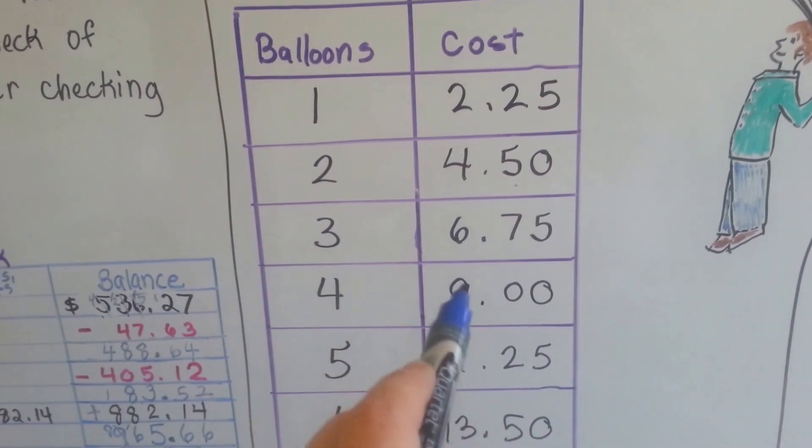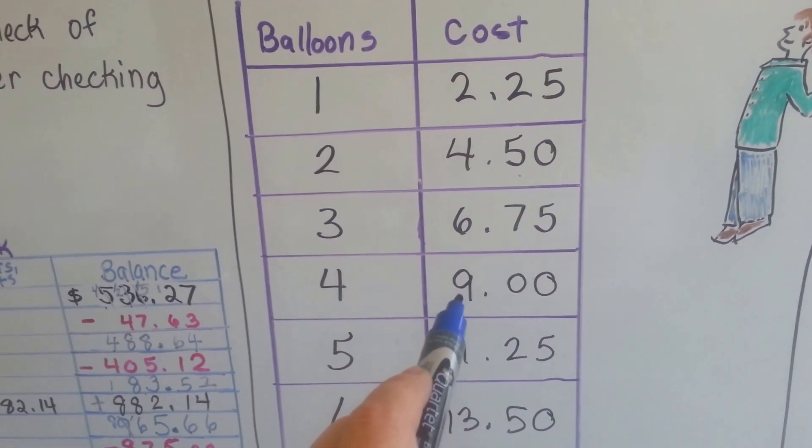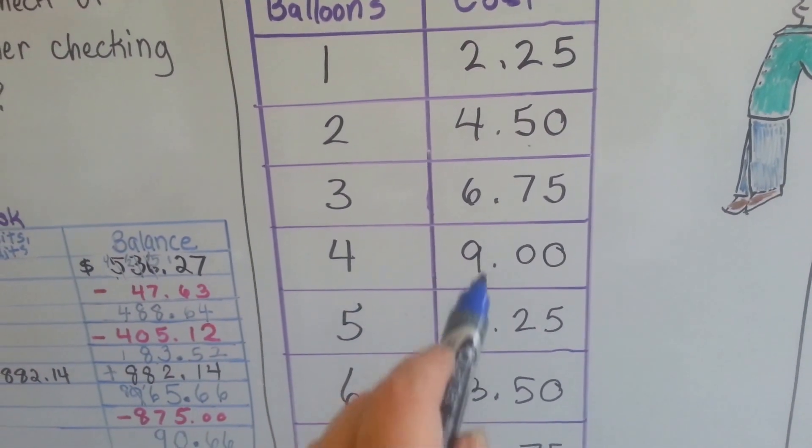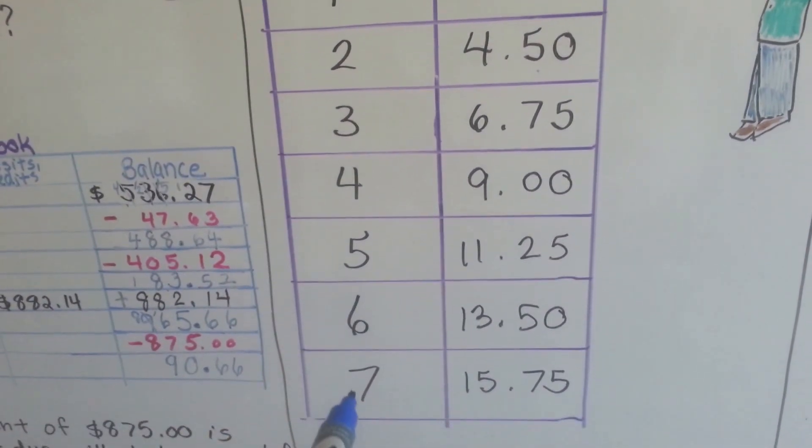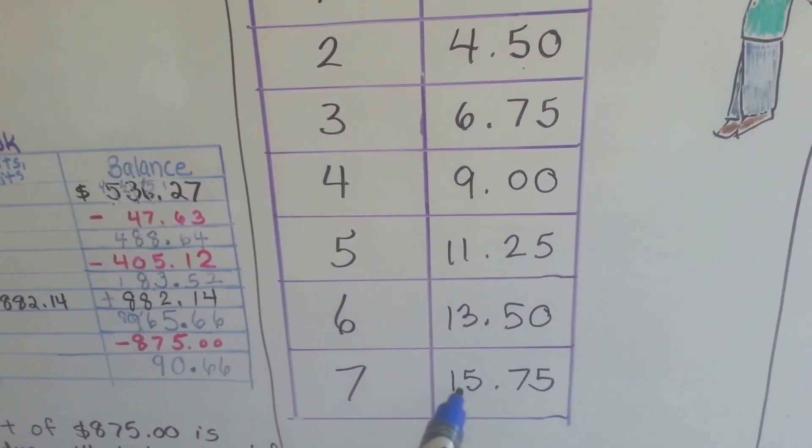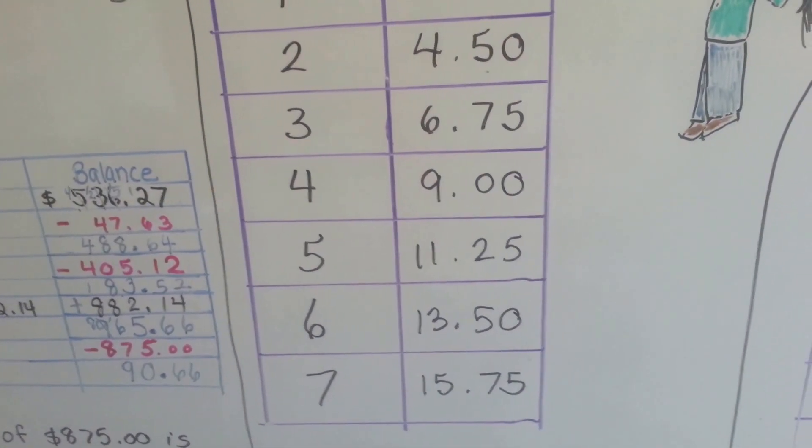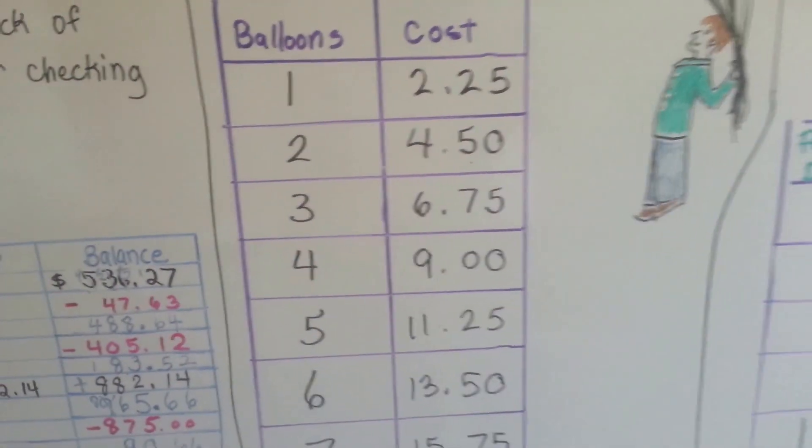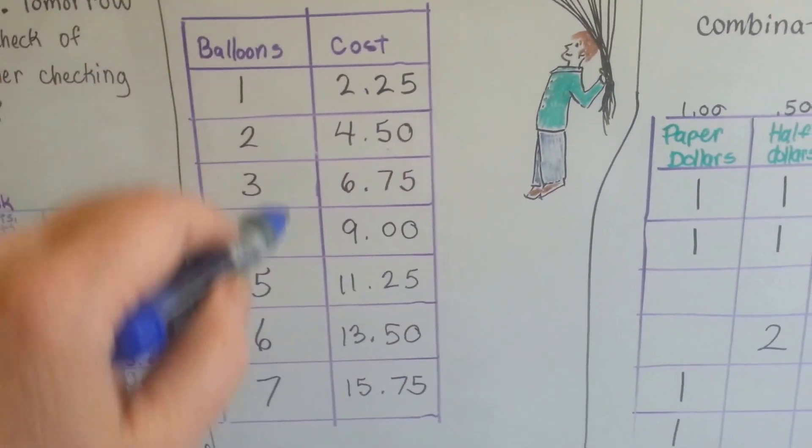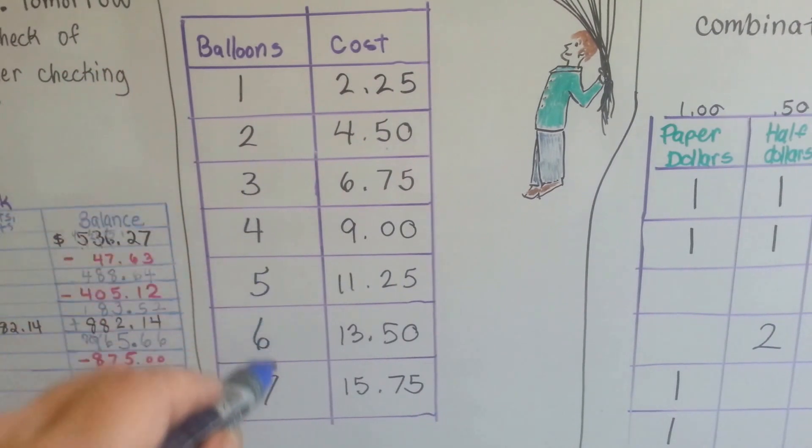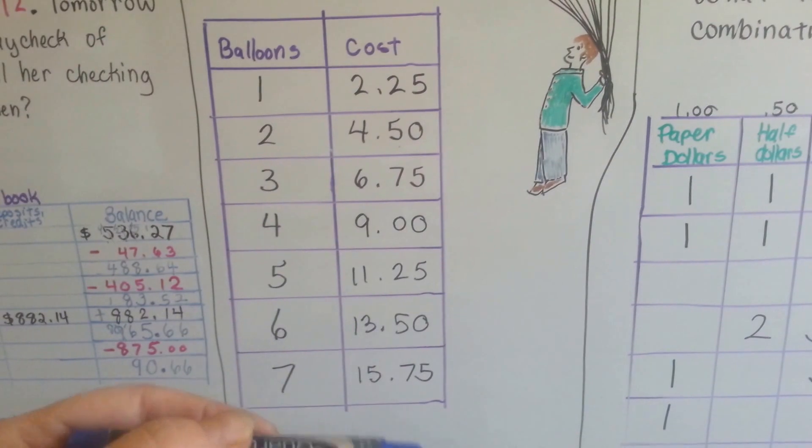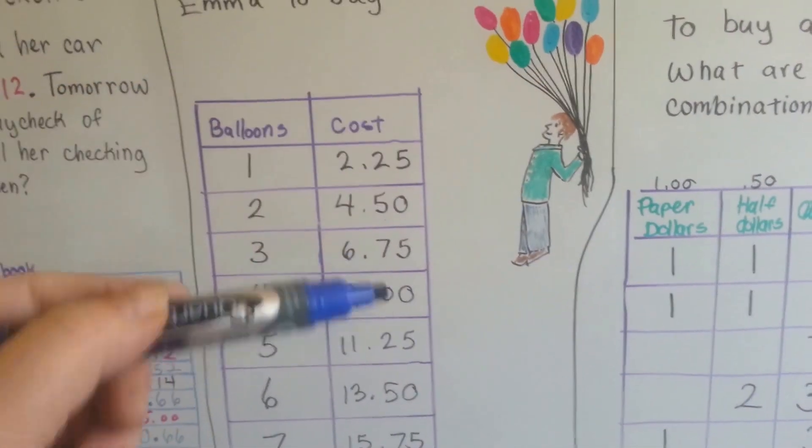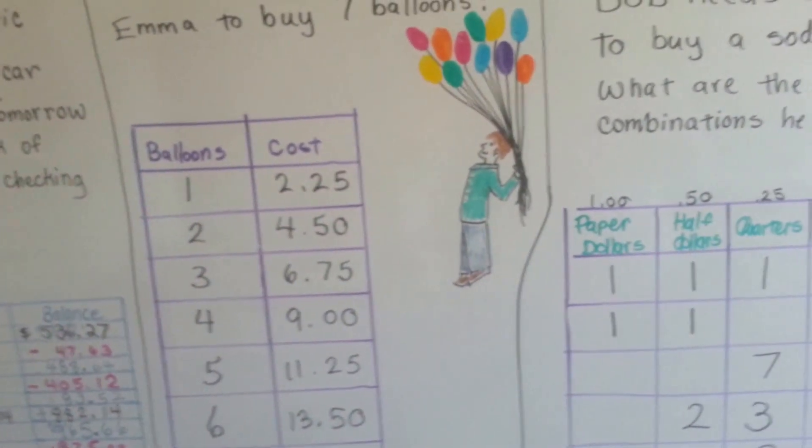We add another $2.25 for three balloons and get $6.75. We add another $2.25 for four balloons and get $9. We add another $2.25 for five balloons and now we have $11.25. And by the time we get to seven balloons, we now see it'll cost $15.75 to buy the seven balloons. So we just made a table going one, two, three, four, five, six, seven, all the way down. And then we increased it by $2.25 for each one because we were adding on another balloon.